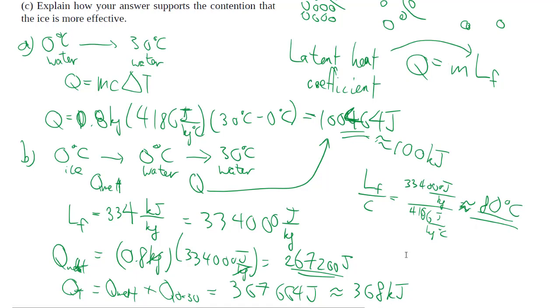And then verbally, just answering part C, it falls out directly from the numbers. The ice can absorb three times as much heat as the cold water in order to reach the same temperature, because you have to add in a substantial amount of heat to change the ice into water first, before you can raise the temperature of that water.